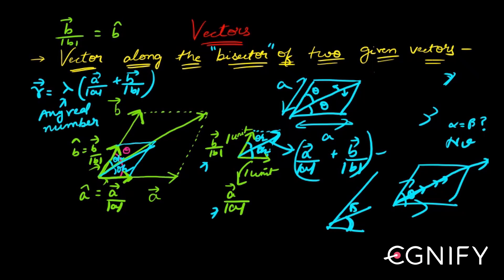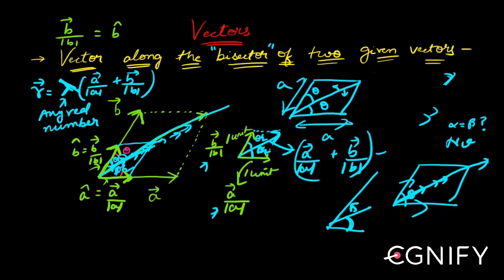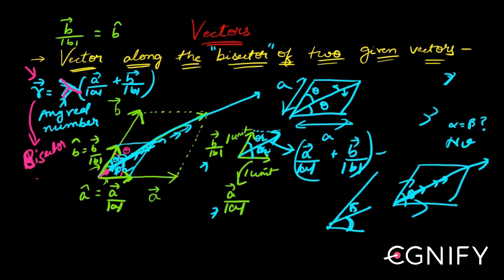What does lambda do? Changing lambda changes the length of the resultant — the blue vector that bisects the angle into theta by 2. If lambda is large, this vector is long; if lambda is small, the vector is short. Depending on lambda, that decides the length of r̄, the bisector vector.